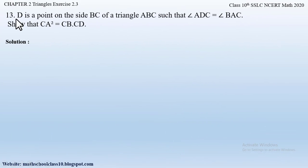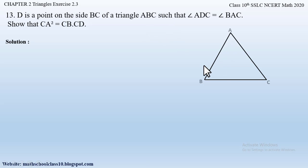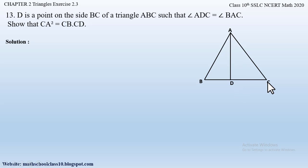Question number 13 from exercise 2.3, chapter 2, Triangles: D is a point on side BC of triangle ABC. First let us draw the figure — a triangle ABC where D is a point on side BC. There is a point D on side BC such that angle ADC is equal to angle BAC, and we have to show that CA² is equal to CB into CD.